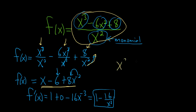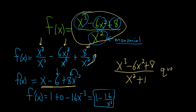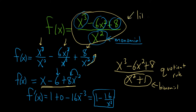If instead you had x cubed minus 6x squared plus 8 over x squared plus 1 — let's say this was the problem — then in this case you unfortunately want to resort to the quotient rule, because breaking it up is not really going to help you. Here you have two terms; this is called a binomial. So it only works when you have a monomial on the bottom. With practice, you will get better. That's it.